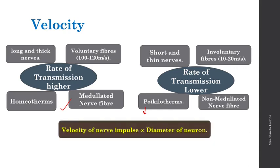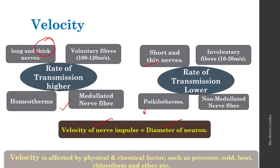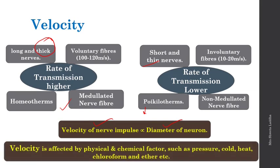The velocity of nerve impulse is directly proportional to the diameter of the neuron. The thicker the neuron, the greater the speed of nerve impulse; the thinner the nerve fiber, the lower the rate of transmission. However, velocity can be affected by physical and chemical factors such as pressure, cold, heat, chloroform, ether, etc.